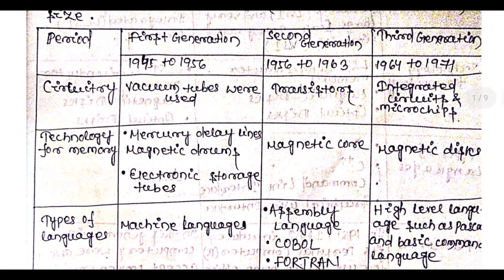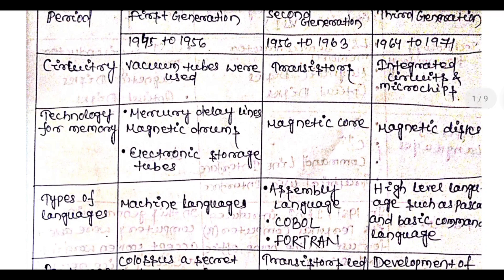The first generation of computers used vacuum tubes. The second generation spans from 1956 to 1963. The third generation began in 1964 and used the integrated circuit, also known as IC.